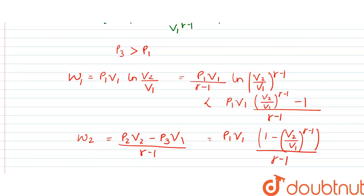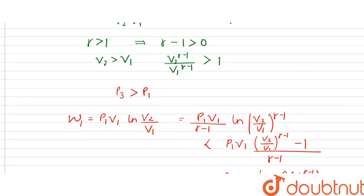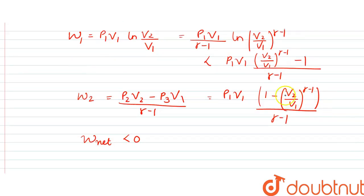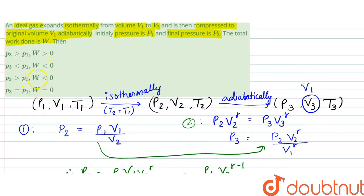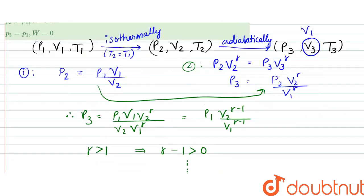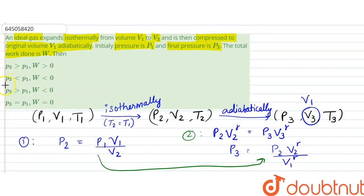Since (v2/v1)^(γ−1) > 1, the term [1 − (v2/v1)^(γ−1)] is negative, making the net work done less than zero. Therefore, the total work done W < 0 and p3 > p1, which corresponds to option C. That is our answer.